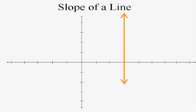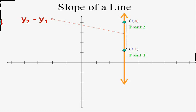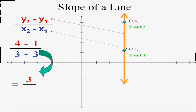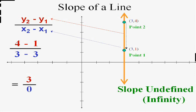What about this vertical line? Pick two points — do you remember what you should get as an answer? y2 minus y1 is four minus one over x2 minus x1, which is three minus three. Four minus one is three, but three minus three is zero. Three over zero is undefined — we can't have zero in the denominator. That's why this slope is undefined. And if you tried to walk on the line, you'd fall forever, so it really makes a lot of sense.